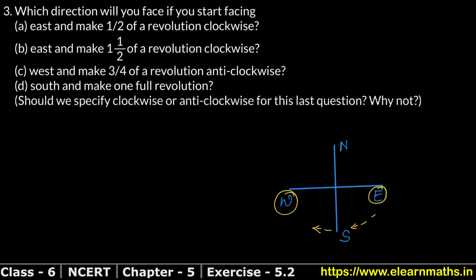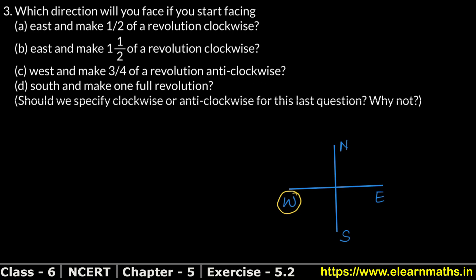Now let's do part C. If you start facing west and make three-fourths of a revolution anti-clockwise — anti-clockwise means the opposite direction to clockwise. We are on west, and three-fourths of a revolution means 3 right angles. Moving anti-clockwise 3 right angles from west: 1 right angle, 2 right angles, 3 right angles — we will reach north.